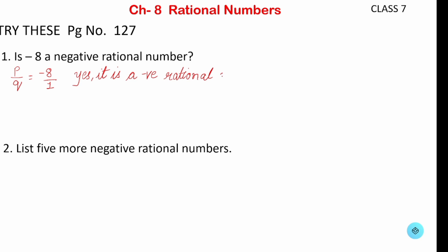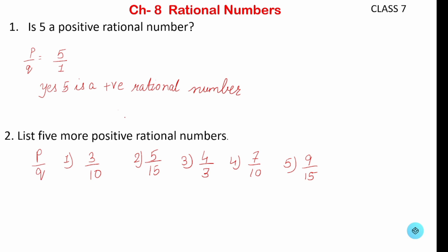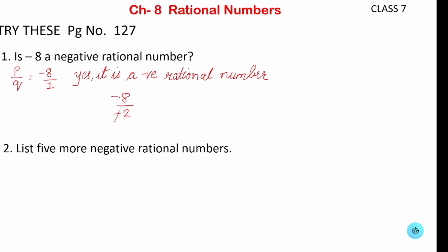For example, if we have minus 8 upon minus 2, this is not negative, because the numerator has a minus sign and the denominator also has a minus sign, so those minus signs will cancel. In that case it won't be a negative rational number — it will be positive.